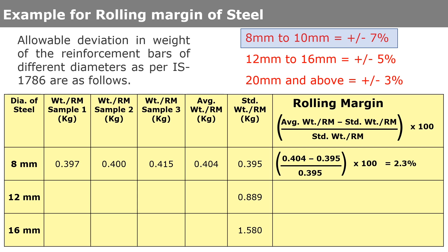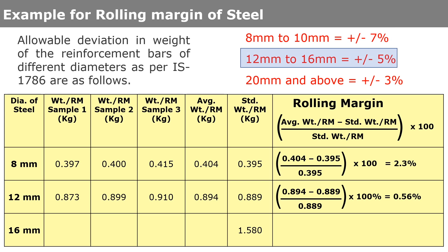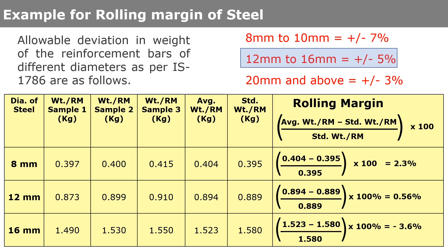Putting this value in the equation: (0.404 − 0.395) / 0.395 × 100, we get the answer as 2.3%. We then check whether the rolling margin derived falls in the acceptable range or not. Since the permissible deviation for 8 mm bar is ±7% and we got 2.3%, the steel is within the acceptable range — hence accepted. Similarly, we can find rolling margins for other diameters and check whether they fall under the acceptable range.